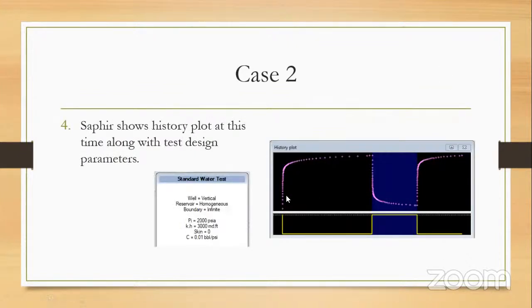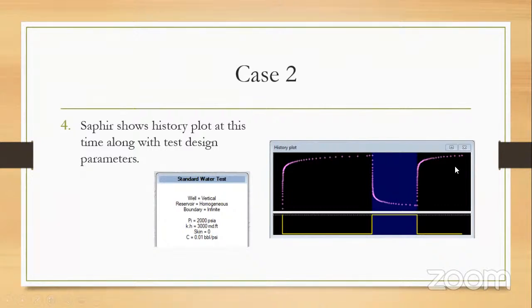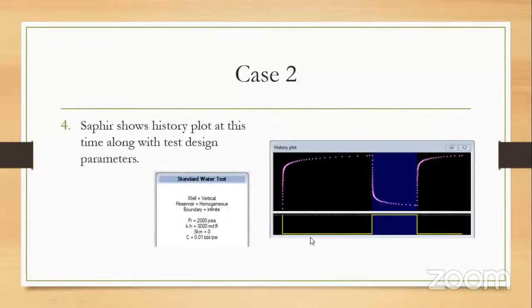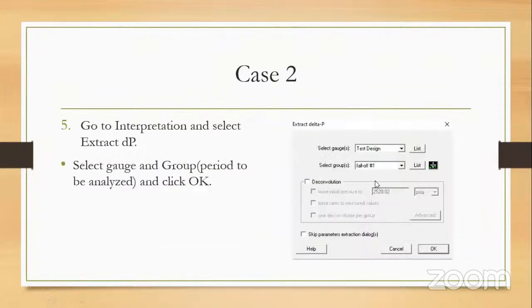The history plot shows the injection period with increasing pressure, then the shut-in falloff period where pressure decreases, then the second injection period. We need to analyze the falloff period. We go to the interpretation tab and select Extract DB. We select our gauge and our group — here we have three groups: the first injection period, the falloff period, and the second injection period. We select the falloff period group, click OK, and accept the parameters.